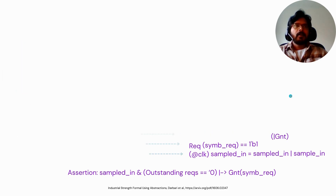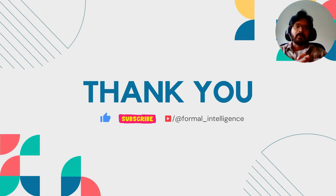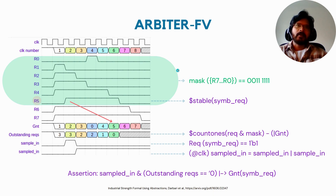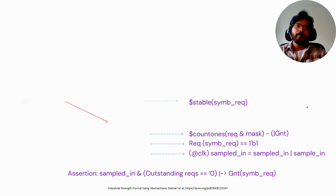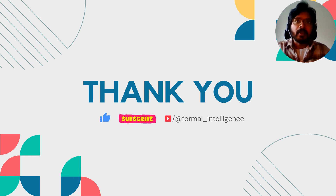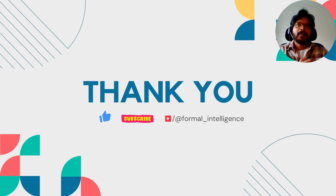So I think that concludes the formal verification of arbiters using a generic approach. One important thing to remember is that the design of the mask can be changed based on the type of arbiter. If it's a first-come-first-served arbiter, a round-robin arbiter, or some other weighted priority arbiter, you can model the mask accordingly and use a similar approach to verify it. I hope you really enjoyed the video. If you found this useful, please don't forget to subscribe, hit the like button, and share it with your colleagues. Stay tuned for our next video where we will dive deeper into another fun formal verification topic. Thank you.